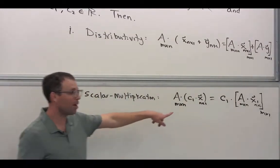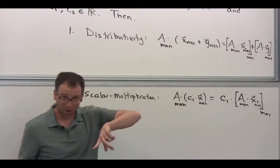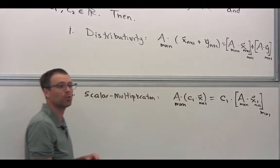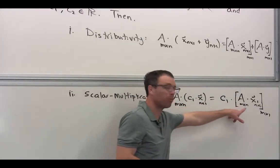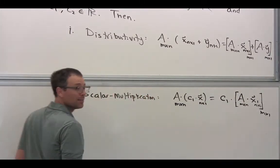What's the claim of this theorem, however? That they're numerically equal to each other. That if I first do the scalar multiplication and then I multiply by the matrix, that's equivalent to first multiplying by the matrix and then scaling.